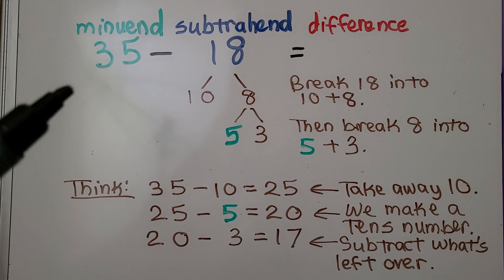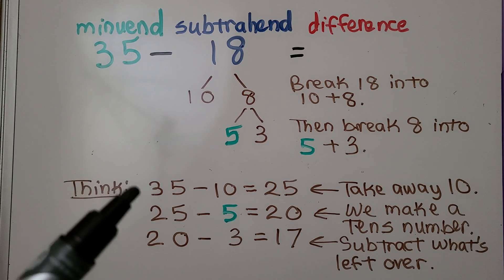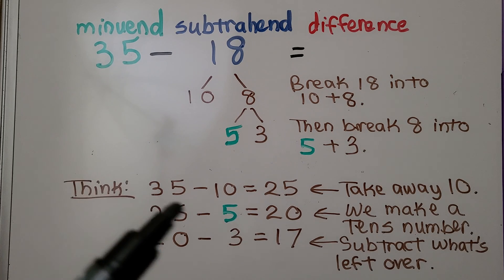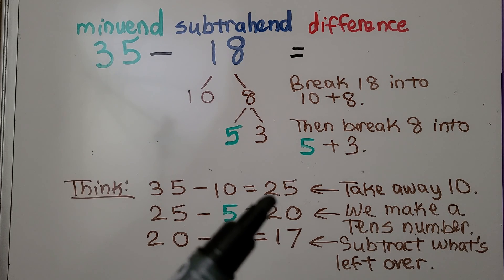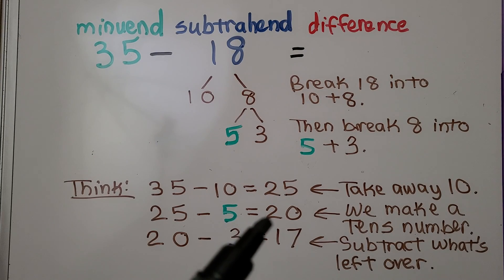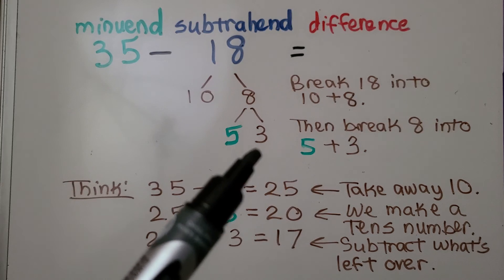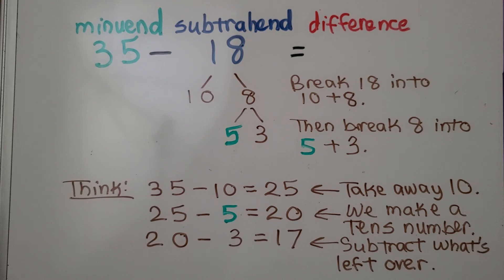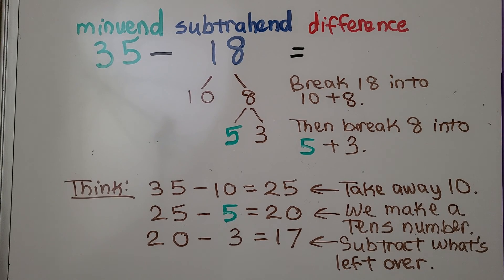We start with the minuend, 35, and we take away the 10. Now we're at 25. Then we take away the 5 to make a tens number. Now we're at 20, and we take away the last 3. It's equal to 17, and we can do this in our head using mental math.